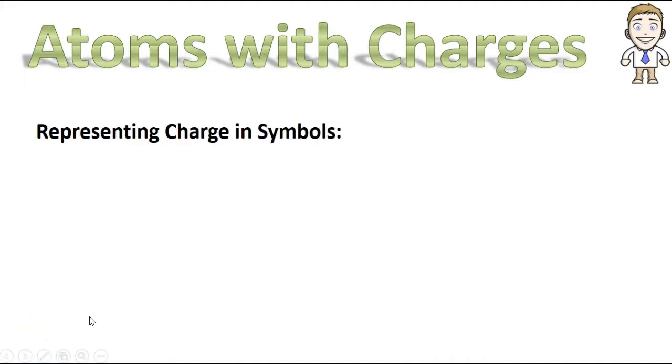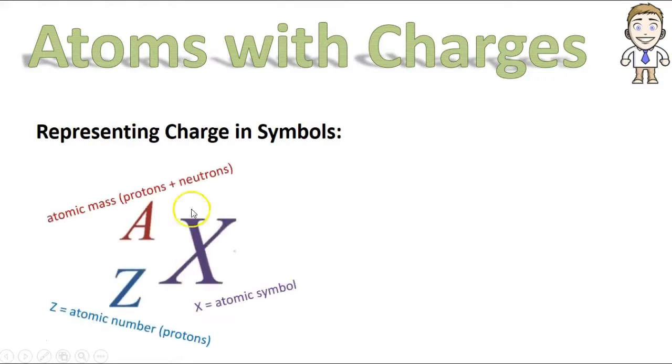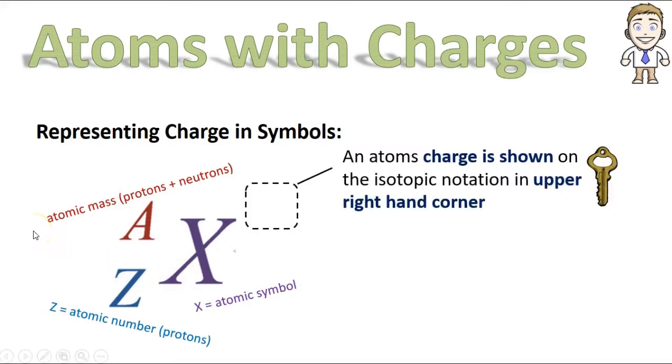There is one more thing we have to mention in this video, and that is, once you find the charge, how do you represent it on the isotopic notation to give a full picture of what an atom is like? It's a pretty simple answer. When you know the charge, you just put it in the upper right-hand corner. So if you find that it's plus one, you fill in plus one. If it's negative three, you fill in negative three and so on.